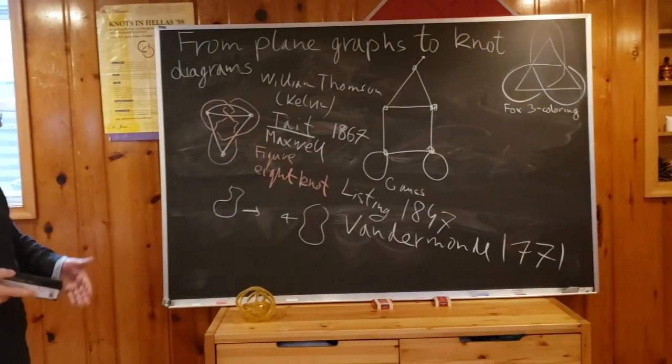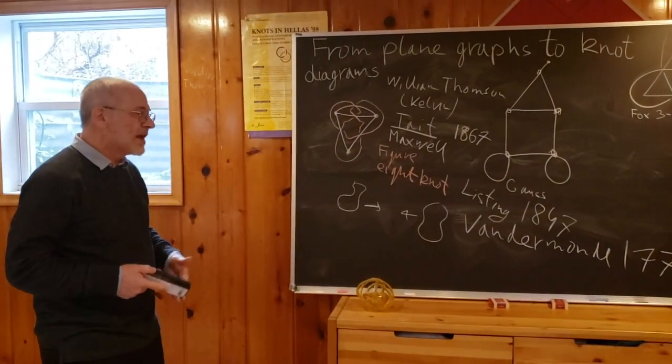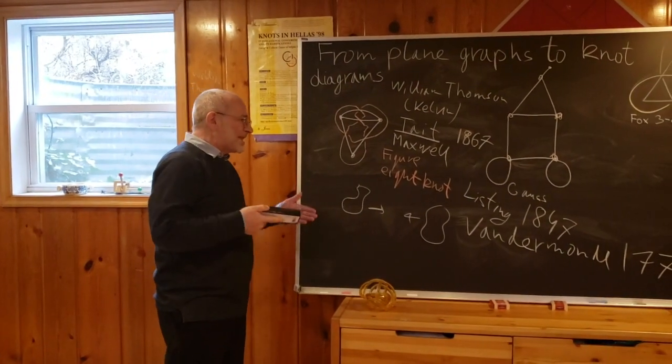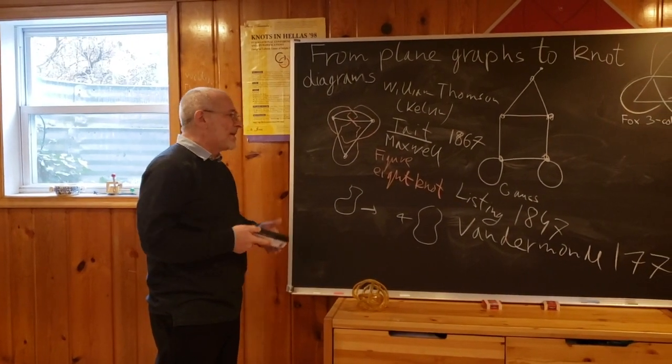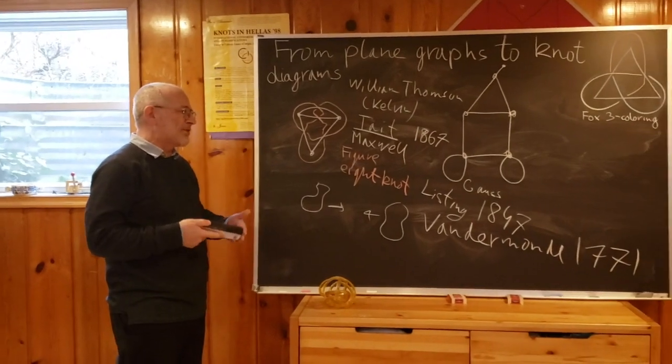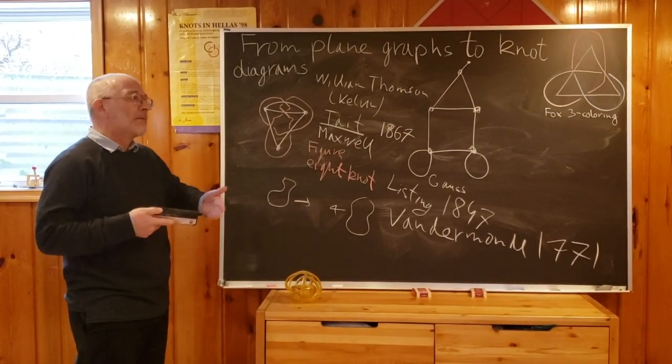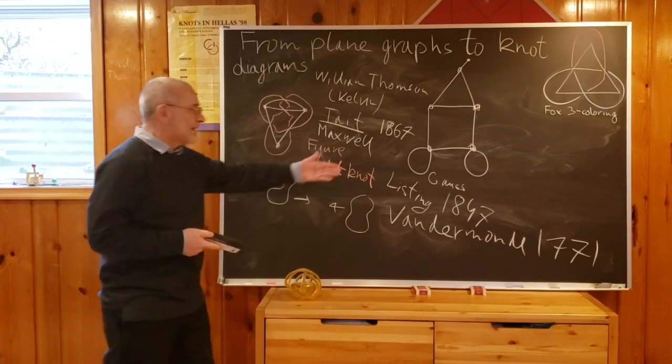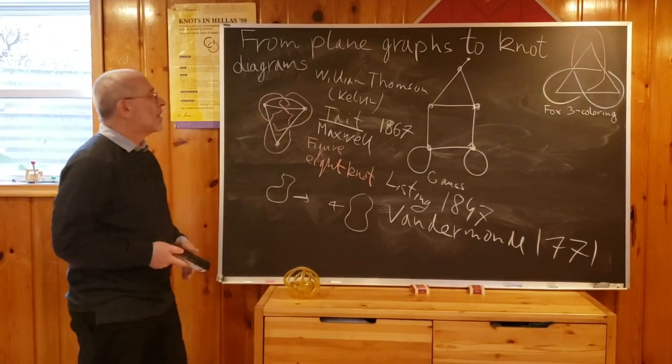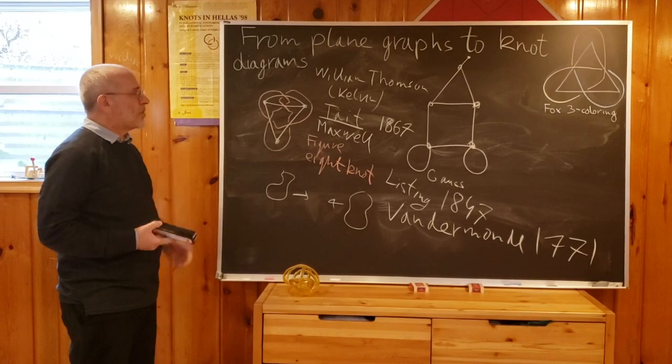However, there is one more mathematician who mentioned knots before. His name is Vandermonde, and it was in 1771. As far as I know, he was the first mathematician thinking about knots as mathematical objects. He was referring even to an earlier prediction of Leibniz that some new geometry, which Leibniz called geometria situs, is needed. So Vandermonde talked about this as an example of geometria situs, as did Gauss and Listing as well.